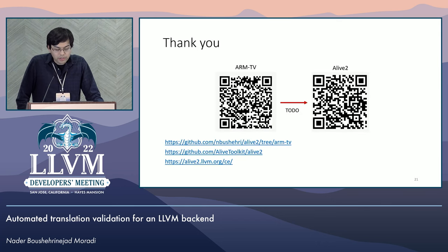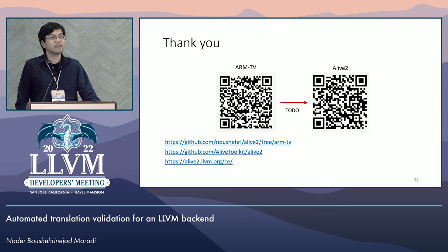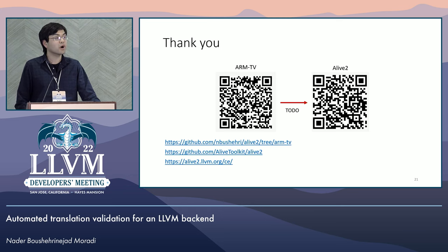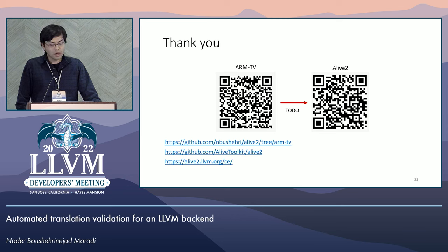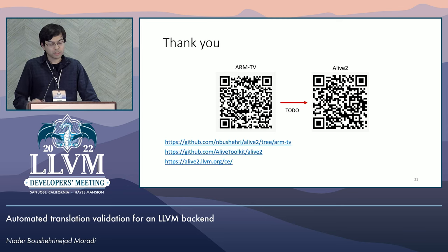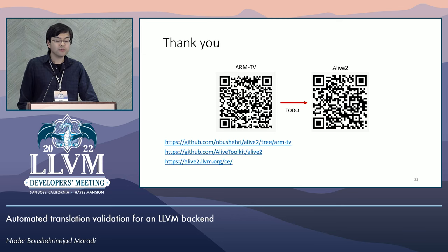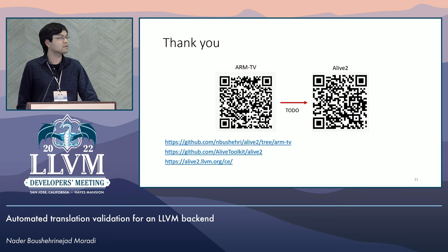Let me conclude. In this talk, we showed that automated translation validation can help find bugs in the LLVM backend. You can check out both ARM TV and Alive 2 in the links and the QR code shown here. Since ARM TV is still a work in progress, it hasn't been added to the Alive 2 upstream branch just yet, and it's not yet accessible via Alive 2's compiler explorer instance. Hopefully, once the tool is more mature, we will make it available as a compiler explorer instance. Lastly, thank you to the LLVM developers who fixed the bugs that we reported, and thank you for listening.